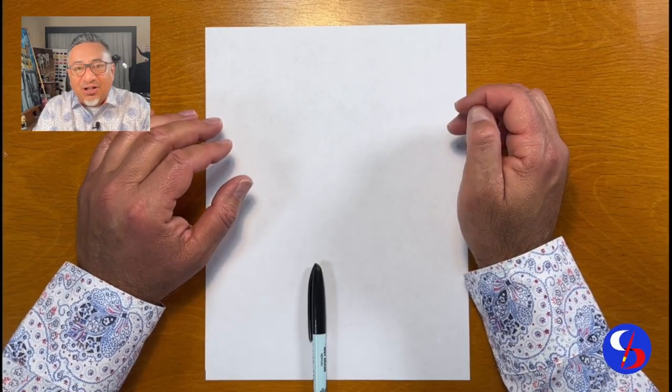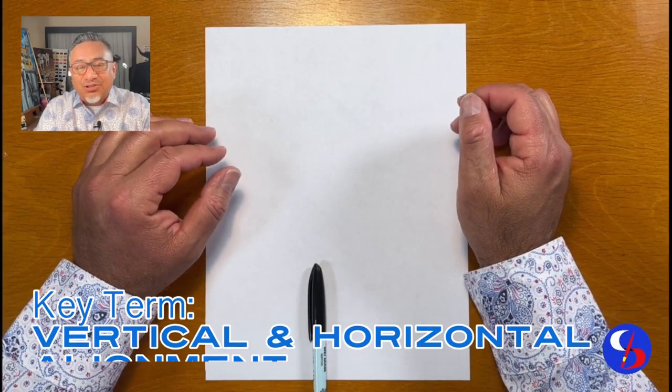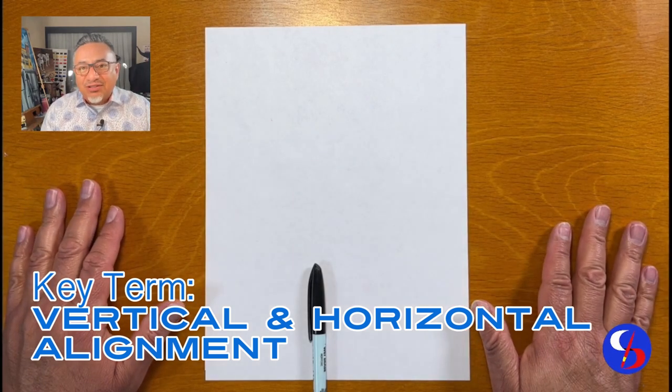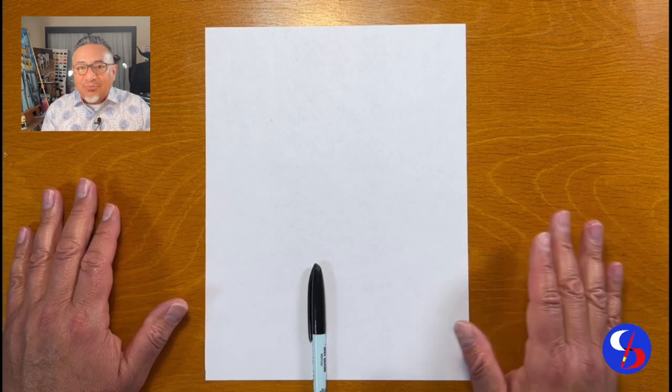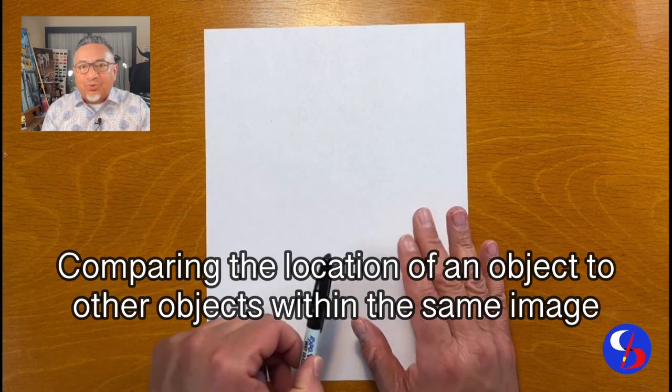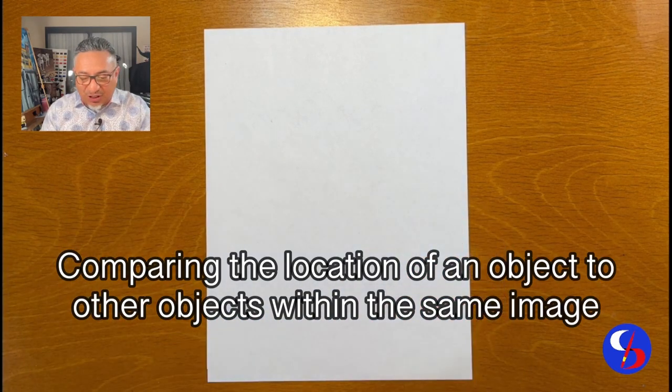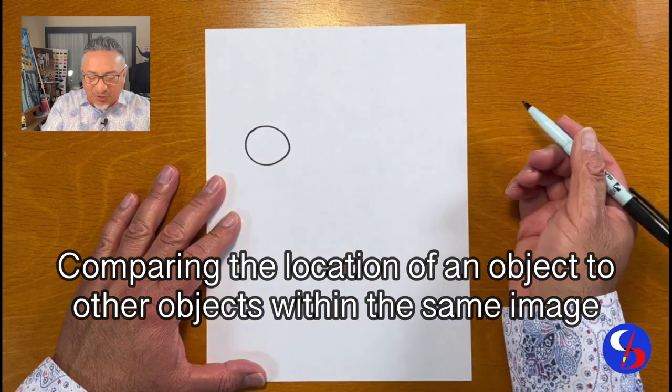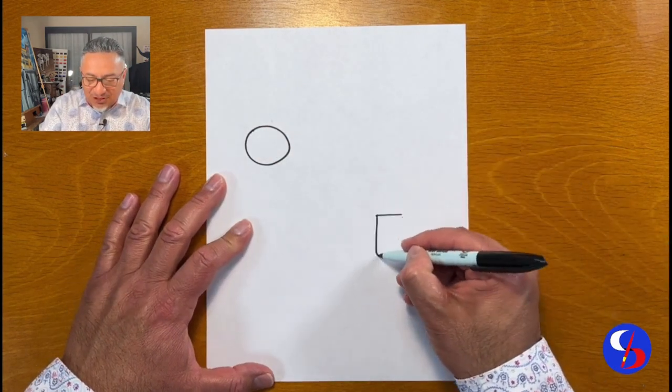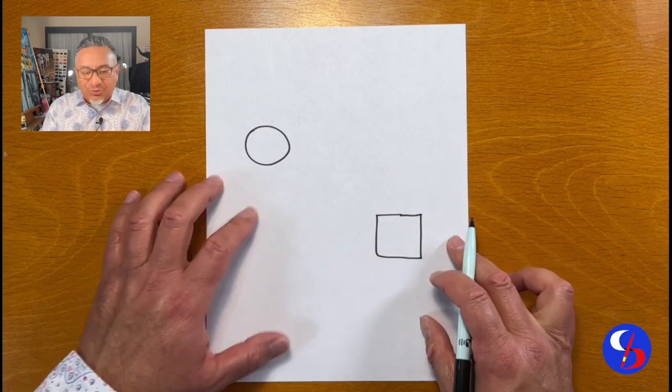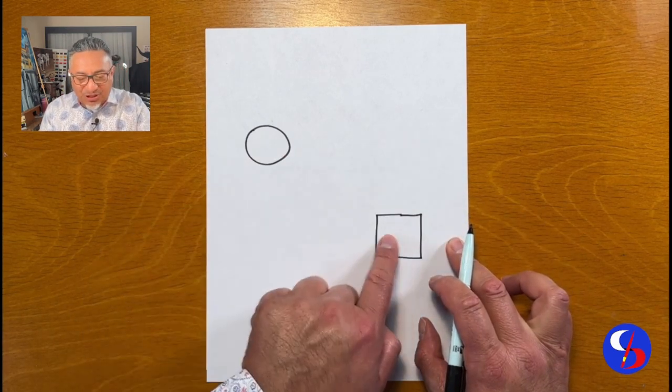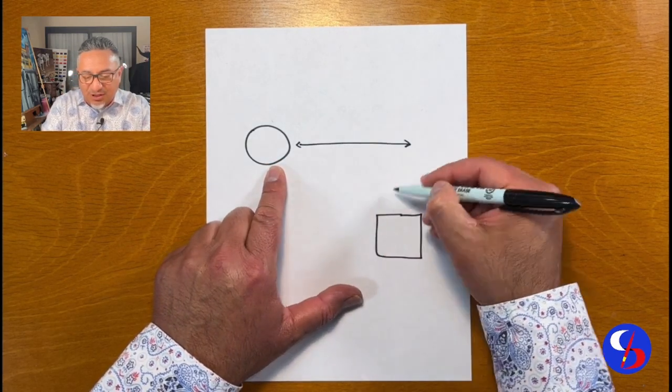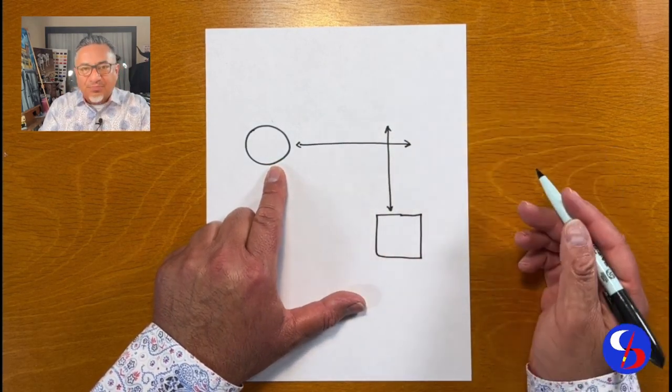The skill we'll be focusing on in this lesson is vertical and horizontal alignment. Vertical and horizontal alignment is something artists naturally look for when they're drawing. This is the process of comparing the location of one object relative to the position of others. So what I mean by that is we use the position of one object to figure out where another one's going to be using horizontal and vertical alignment.